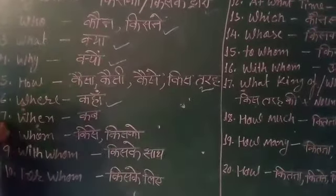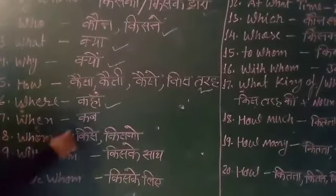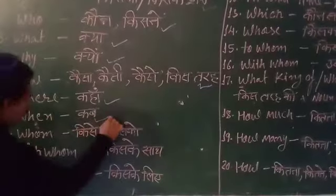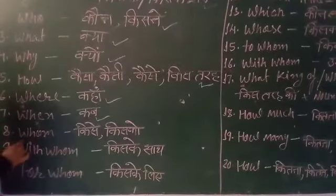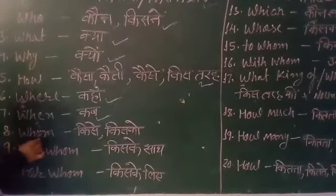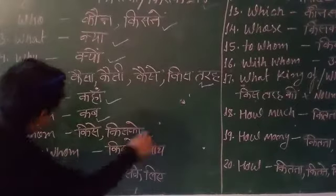The next word is 'When' — 'When' means Kab. Then the next one is 'Whom' — 'Whom' means Kise, Kisku.